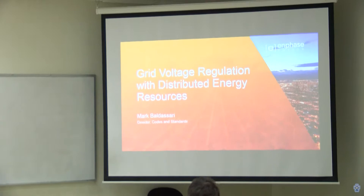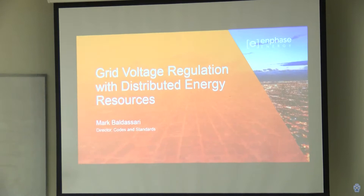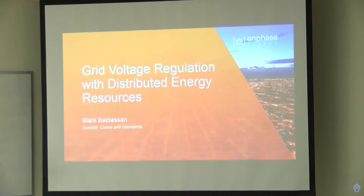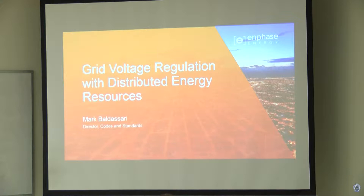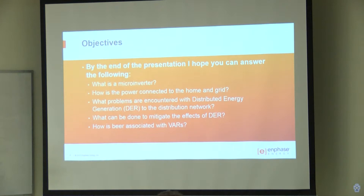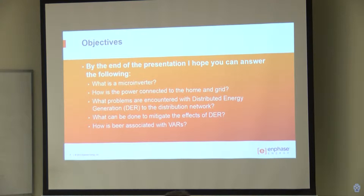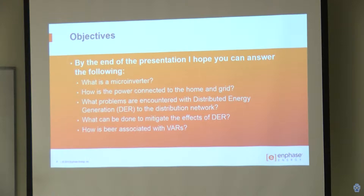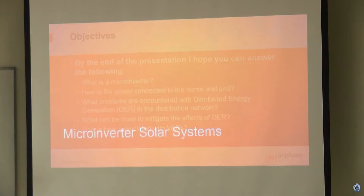Grid voltage regulation with distributed energy resources — DER refers to anything that generates power: a PV inverter, a wind turbine, hydroelectric, or even a Tesla battery in a car exporting power to the grid. Today we're going to cover: what is a microinverter; how we connect that power to the grid; what problems arise with high penetration of DER; how we can mitigate these effects; and how beer is associated with VARs.